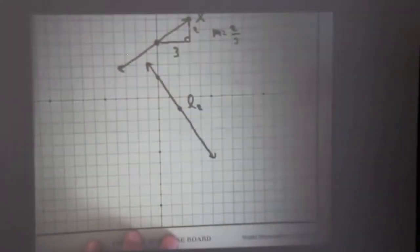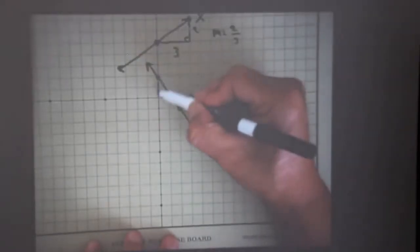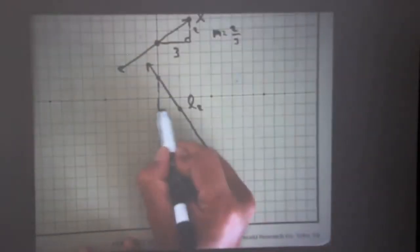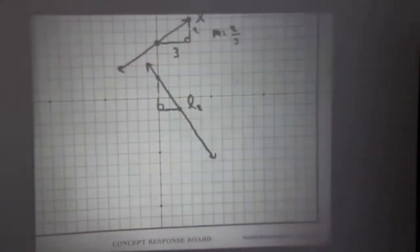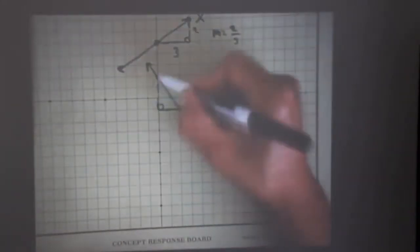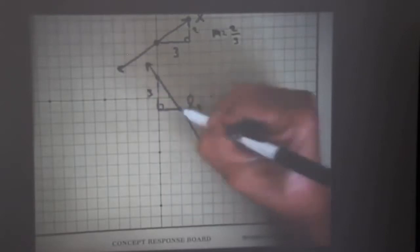For example here and here. I will draw my slope triangle that connects those two points nicely this way. Notice again I can draw the slope triangle anywhere. I'm going to draw it this way. Here's line two. This length is three. This length is two.